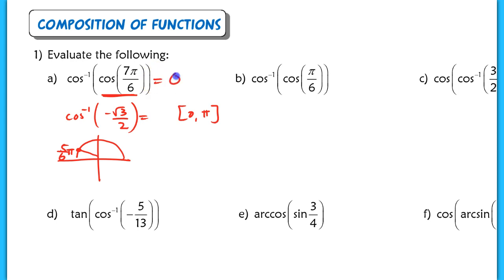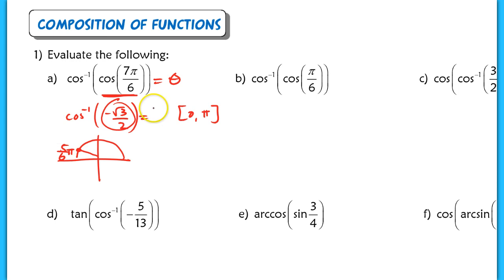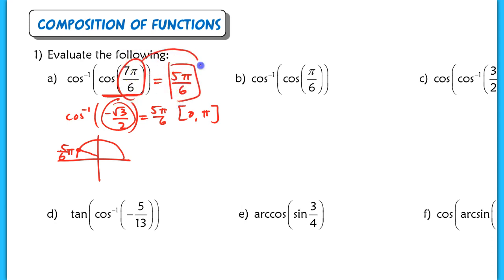The output here should be some angle. When you take the cosine of some angle, you get a ratio. And when you take the inverse cosine of a ratio, you end up with an angle measure. So that answer is 5π/6. The inverse cosine of the cosine of 7π/6, which is equivalent to the inverse cosine of negative √3/2, equals 5π/6. We modify that angle to make sure it falls between 0 and π.